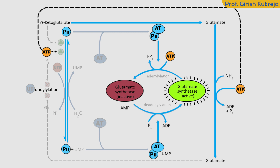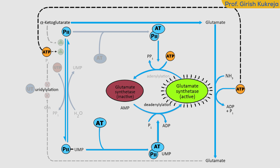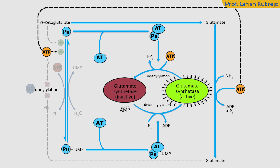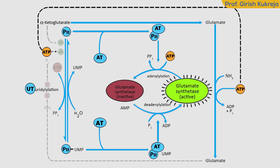Uridylation also occurs at a tyrosine residue. The key point is that if P2 is uridylated, it combines with adenyl transferase and promotes deadenylation, making glutamine synthetase active. While deuridylated P2 combines with adenyl transferase and promotes adenylation, making the enzyme inactive.